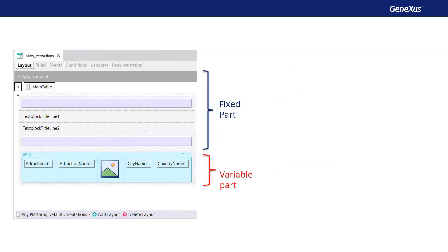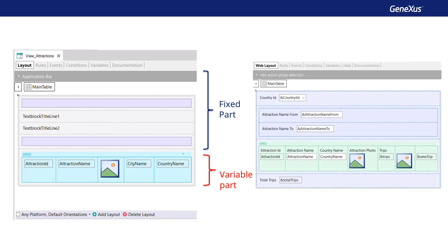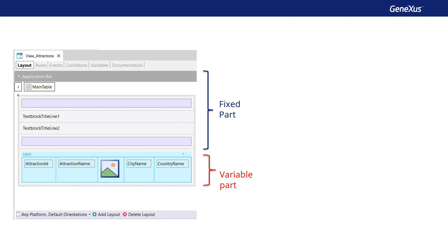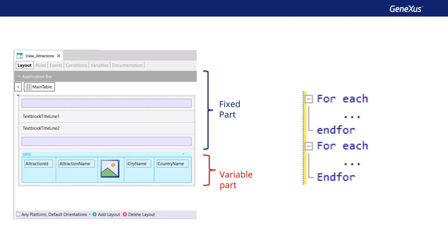Remember that here panels work differently than web panels. In a web panel with a single grid, if there is a base table, the base table of the web panel is unique and there aren't two separate base tables for the fixed part and the grid, as in the case of panels. Since in a panel object the fixed part and the grid determine independent navigations and each part will have its own base table, it's as if there were two parallel for each commands.